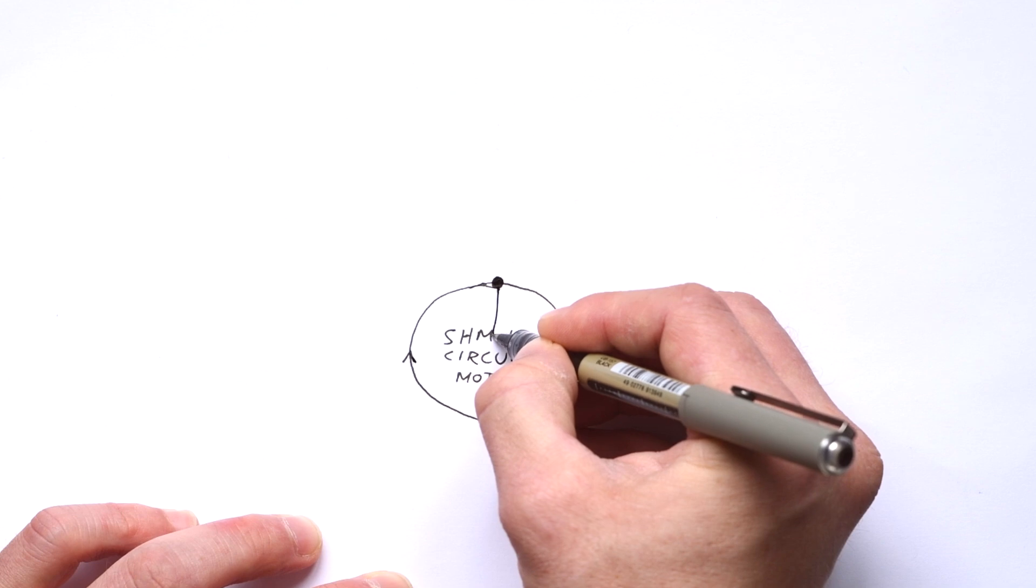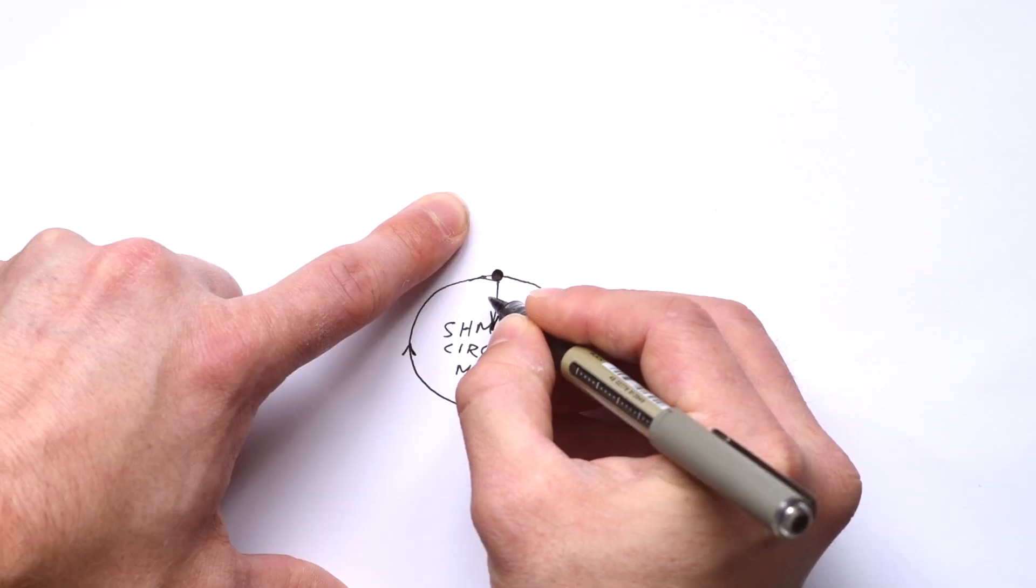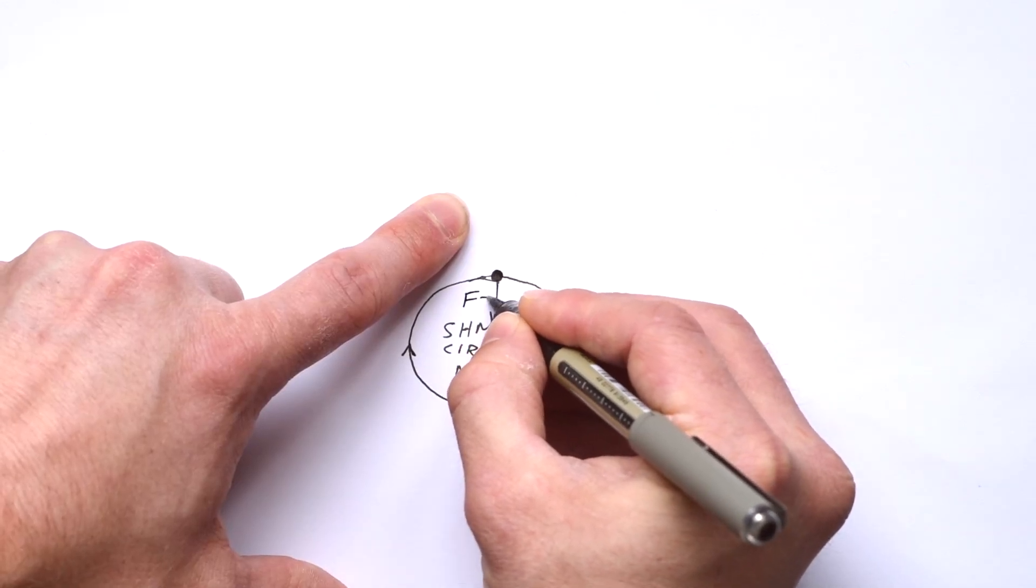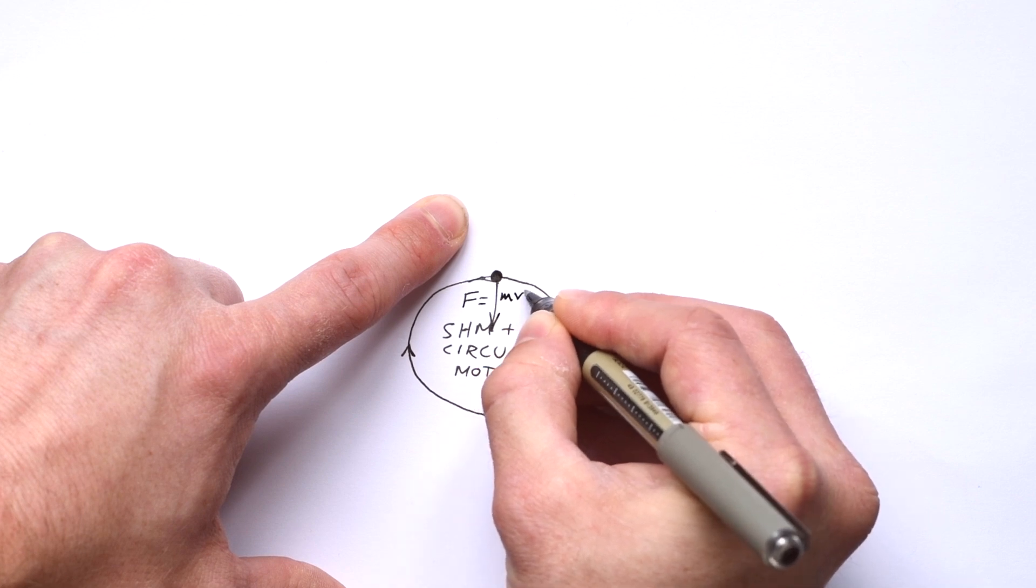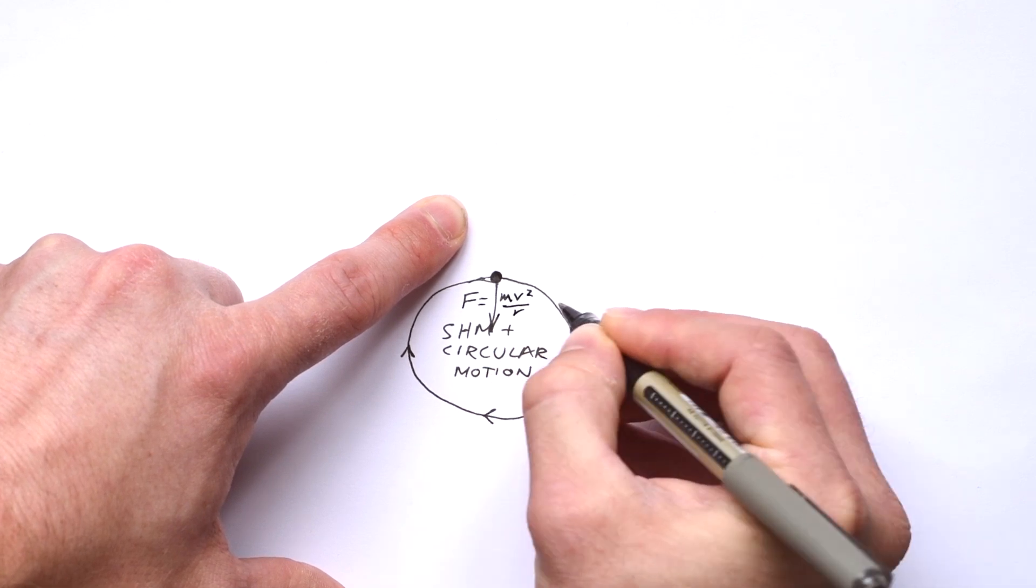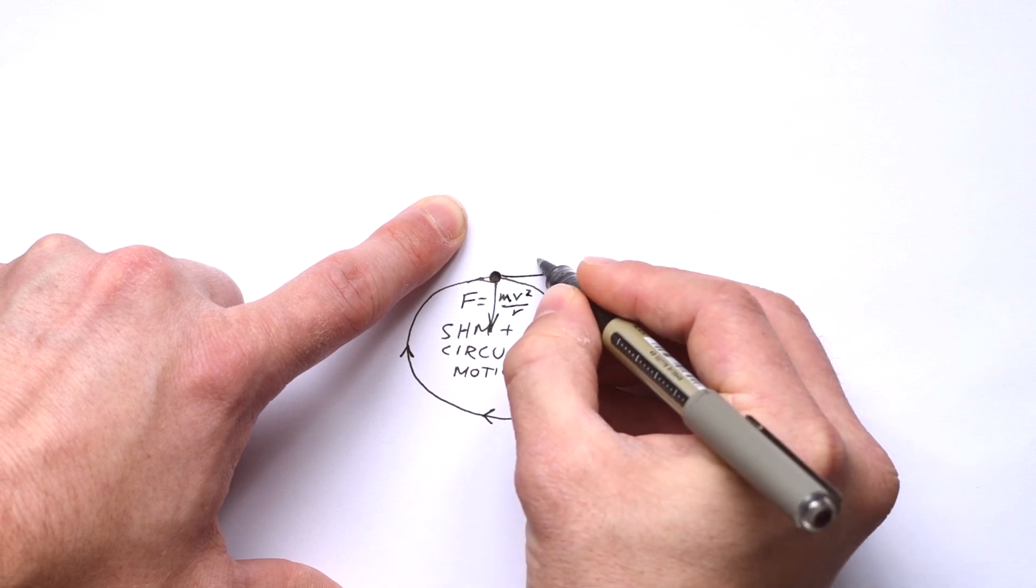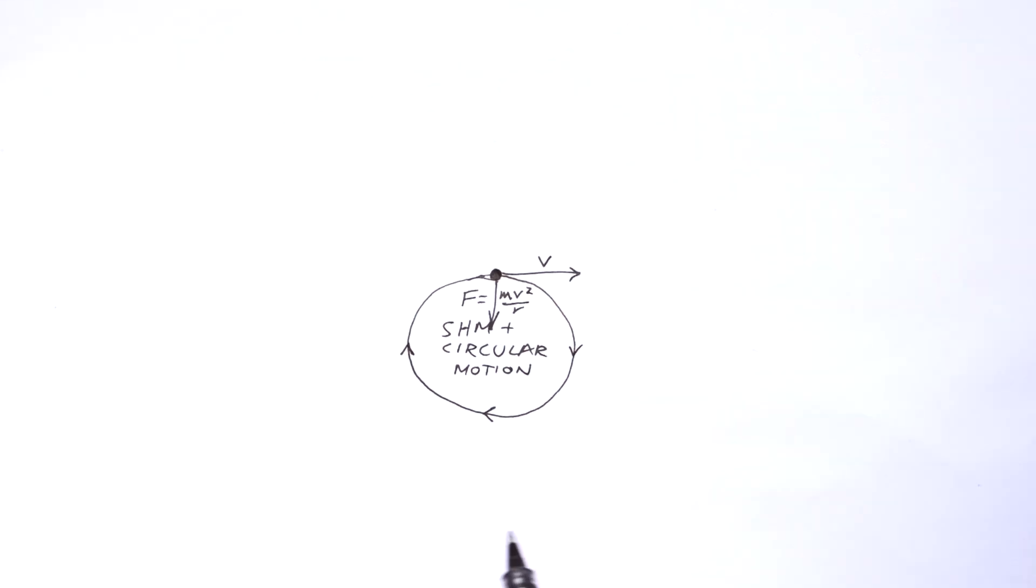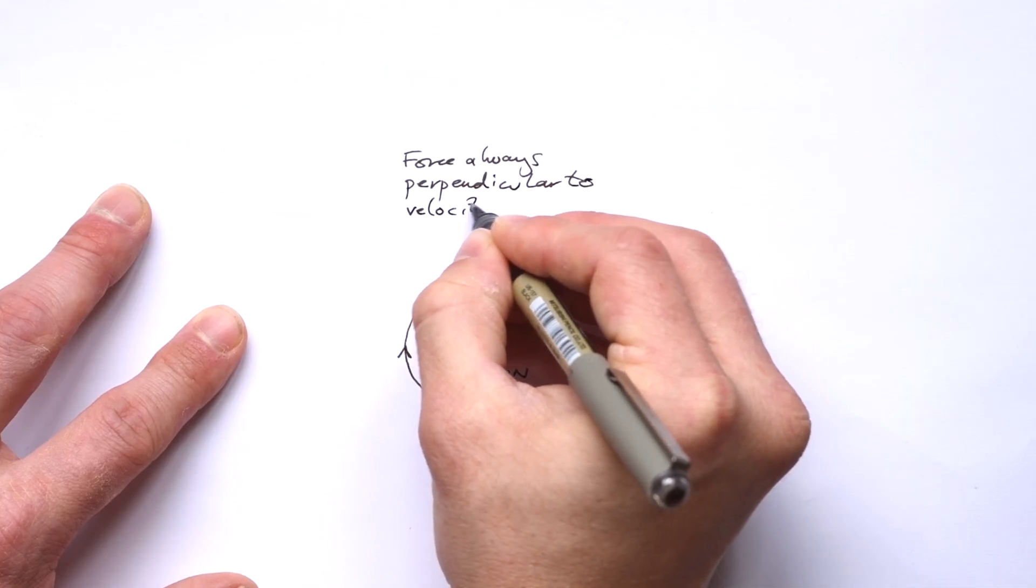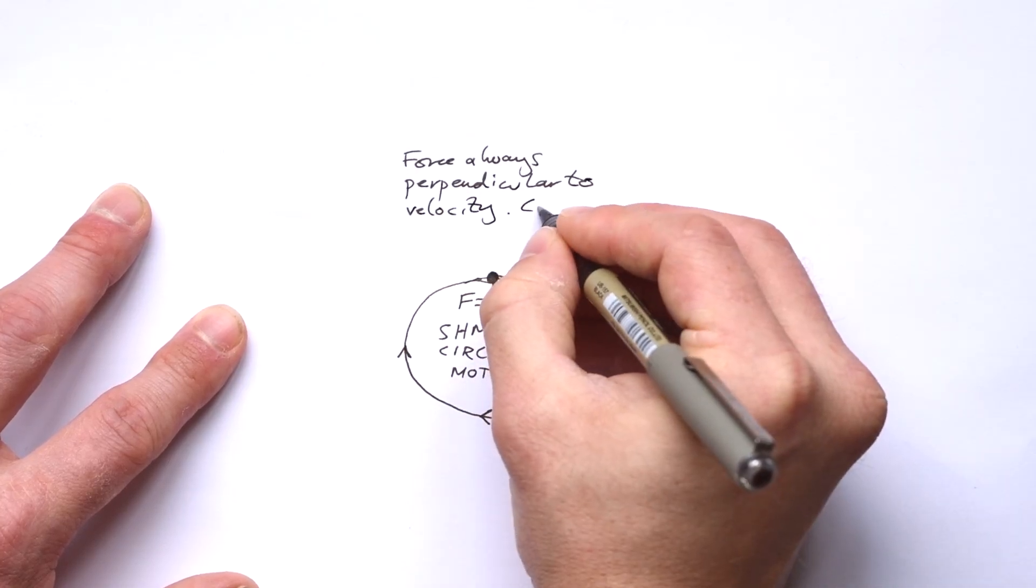So the first thing we know is that if something moves in a circle, then the force, that's the centripetal force, must be pointing towards the center of the circle, the center of the path. And velocity is at a tangent to the path at any point. The equation for centripetal force is F equals mv squared over r. Force and velocity are always perpendicular to one another.